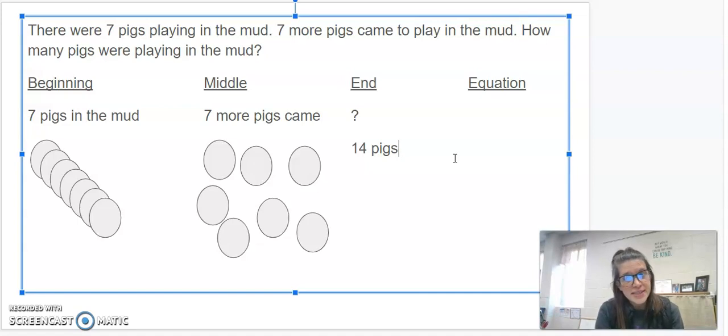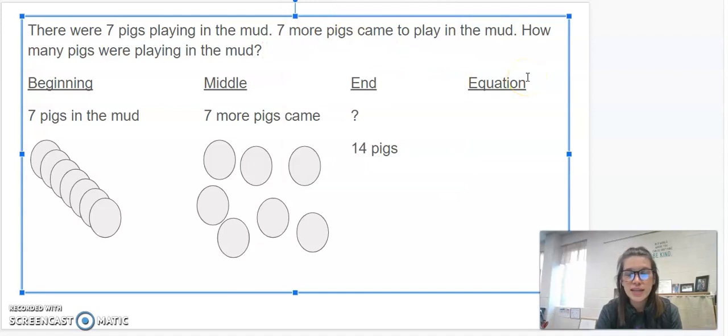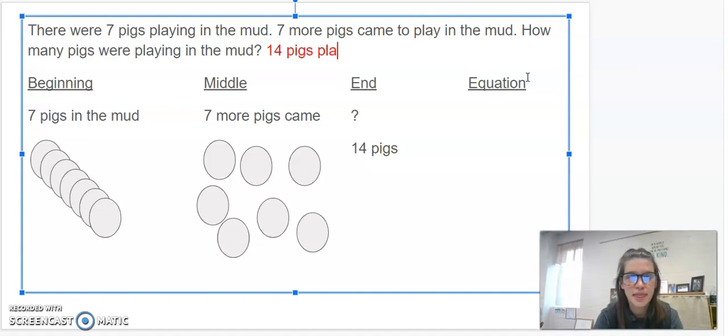Now, mathematicians, we're not done yet. Even though my work shows how many pigs were playing, I haven't written the ending to our story problem yet. So, remember, first grade mathematicians, we'll come back to the problem, and we need to write the end to our problem. So, I'm going to write 14 pigs playing in the mud.